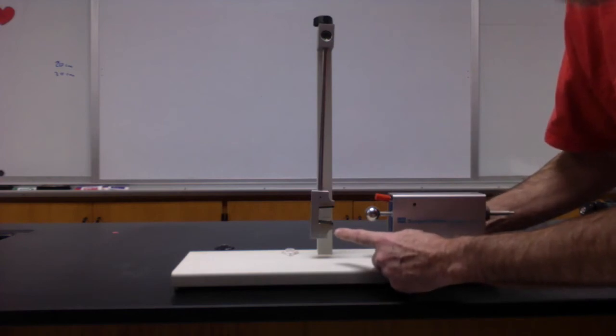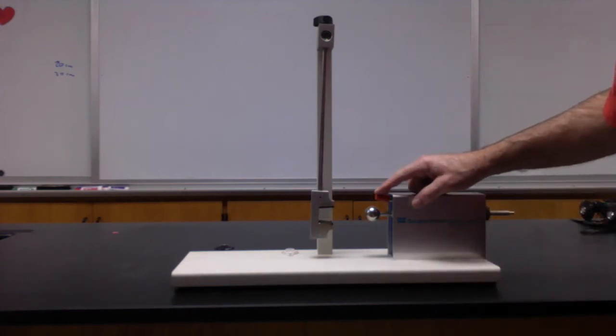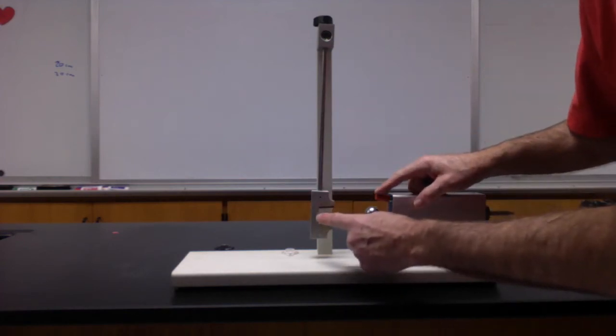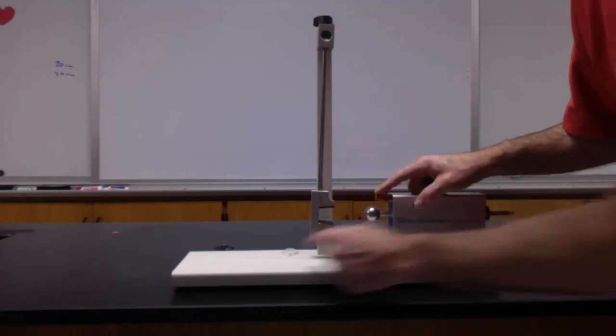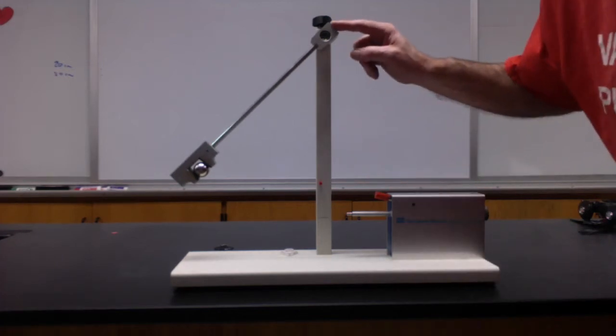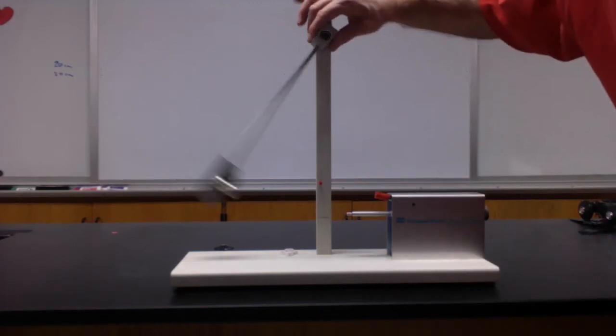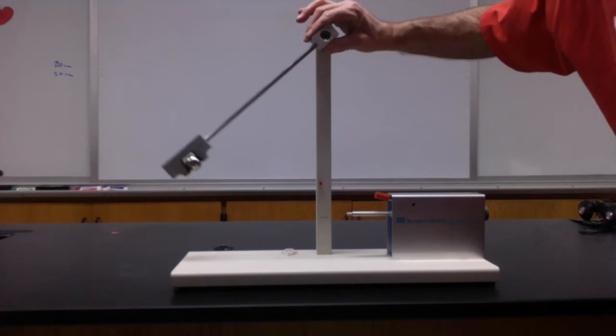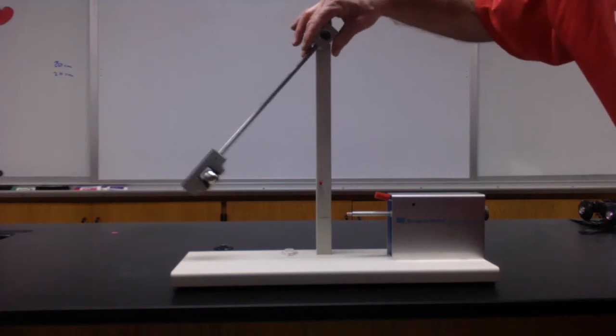This is the catcher. When I trigger the spring, there's going to be a collision, and then this acts like a pendulum to swing up. There's a ratcheting mechanism up here that allows this thing to swing easily up but catches so it won't come back down.